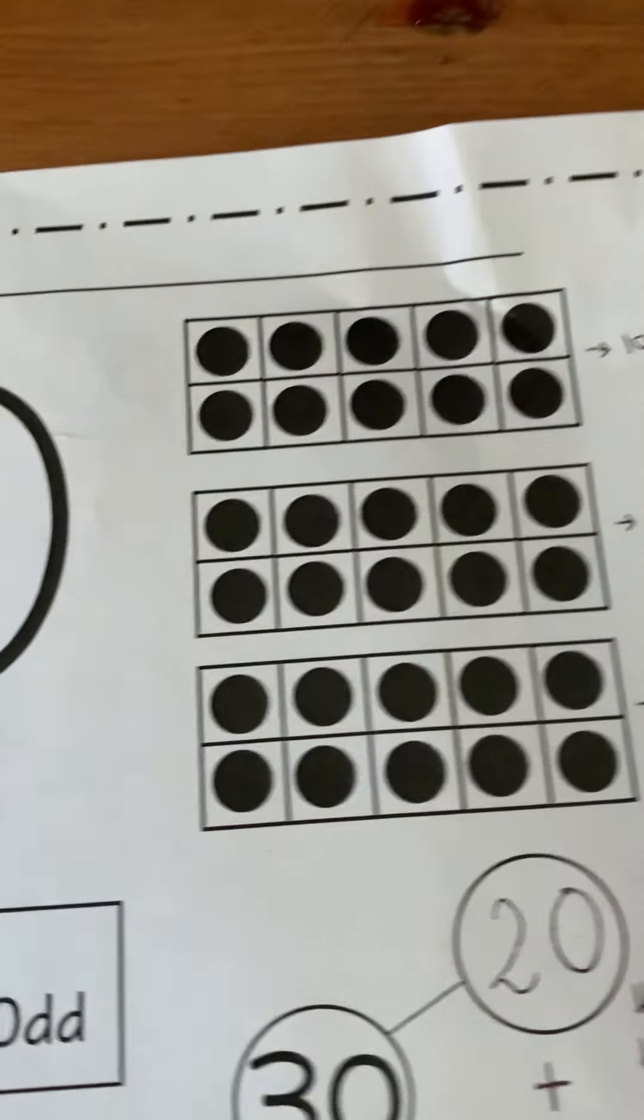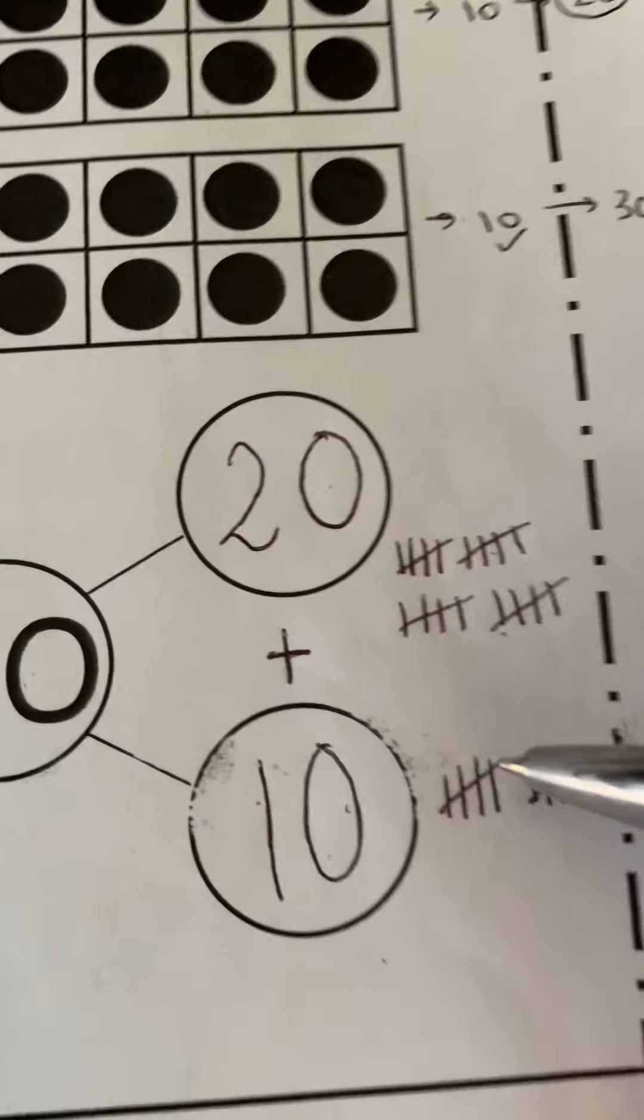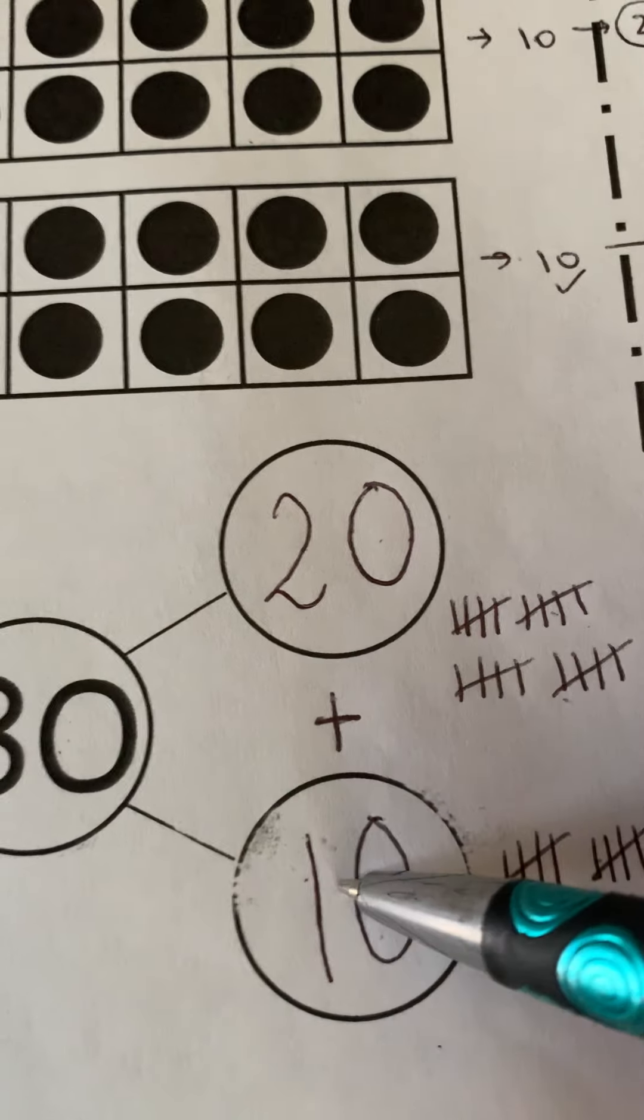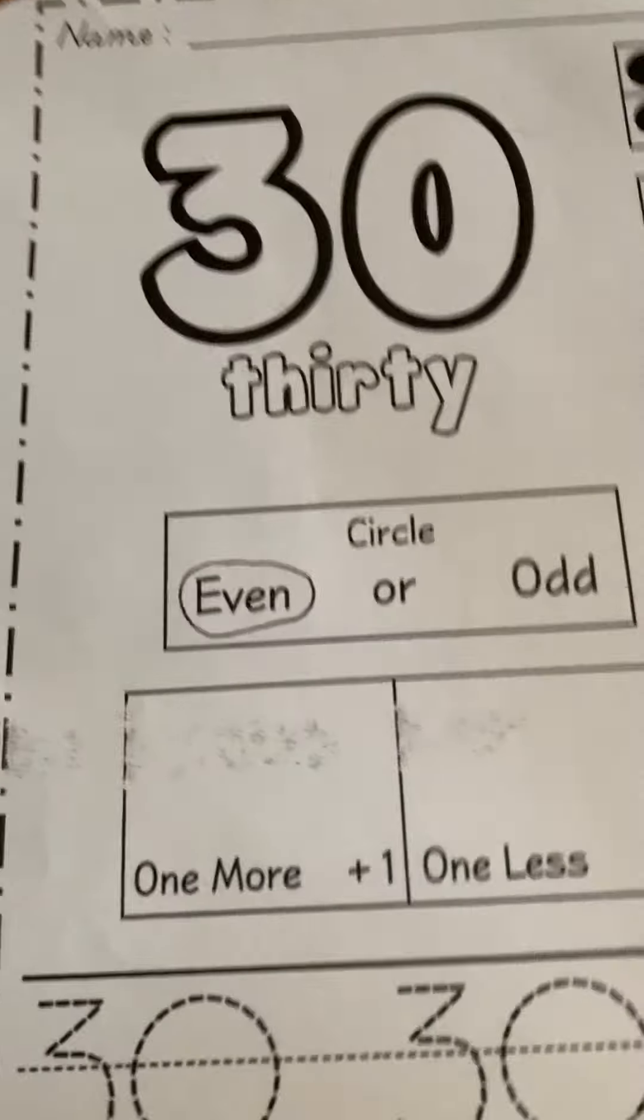Here are my three groups of 10. Just like I have three groups of 10 here. So we know that 20 plus 10 equals 30.